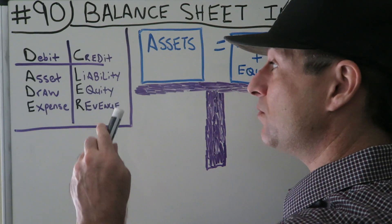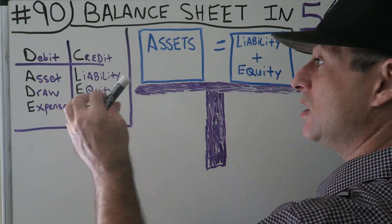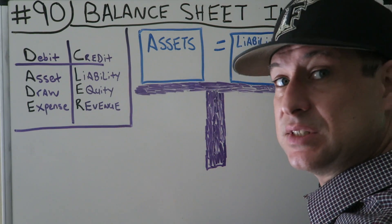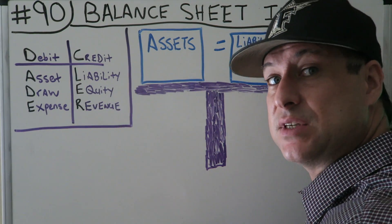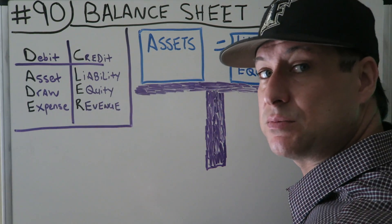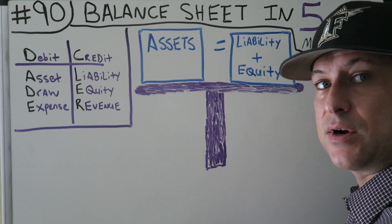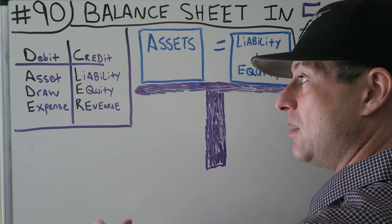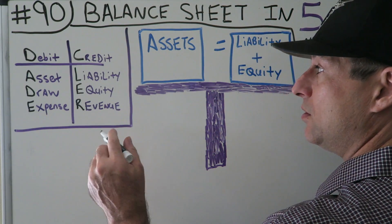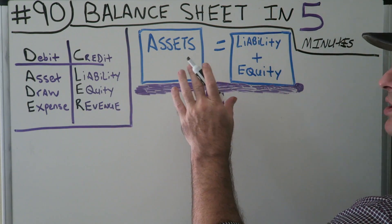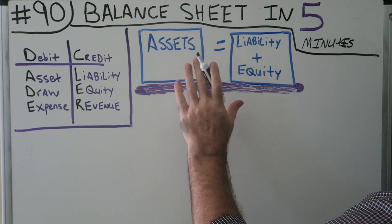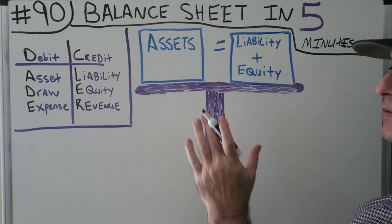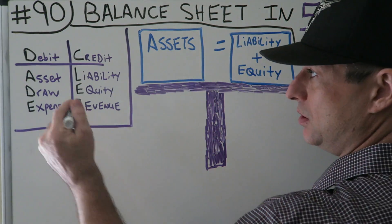We're going to start off with our DCA lure. If you don't know about DCA lure, if you haven't seen other videos, watch some other ones. It's kind of our base for everything. And then out of that we have our balance sheet, which is assets equal liabilities plus equity.